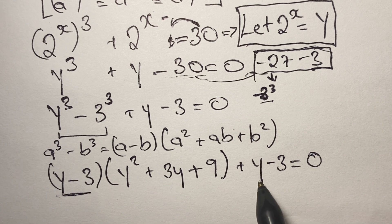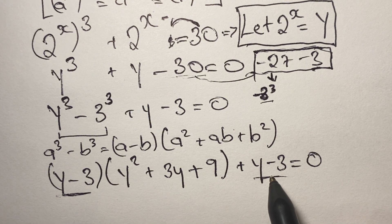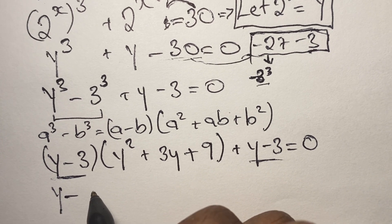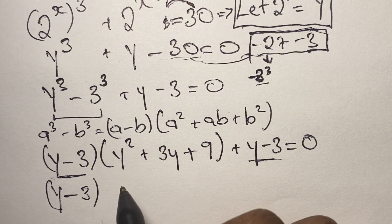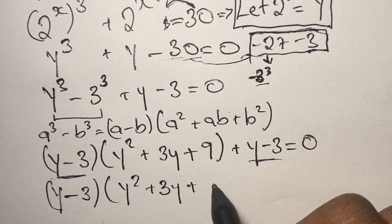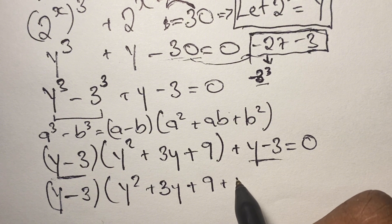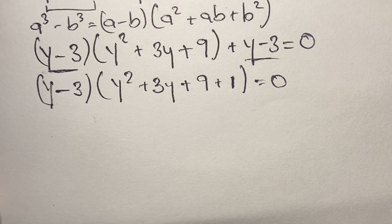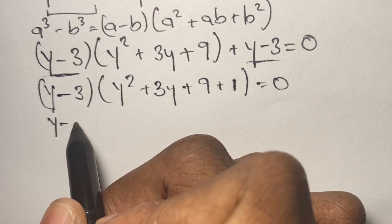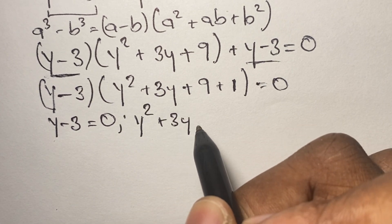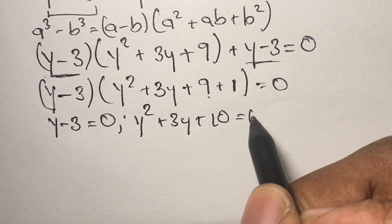We also have y minus 3 appearing again from the grouped terms, so we can factor out y minus 3. This gives y minus 3 in the first bracket, multiplied by y squared plus 3y plus 9 plus 1, in the second bracket. So y minus 3 equals 0, and we also have y squared plus 3y plus 10 equals 0.